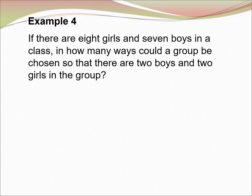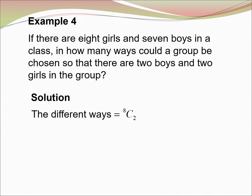Example 4. If there are 8 girls and 7 boys in the class, in how many ways could the group be chosen so that there are 2 boys and 2 girls in the group? We have 8 girls and we need to choose 2 only, so the method is 8C2. And we also have 7 boys and we want to choose 2, so the method is 7C2. Since this happens together, it becomes 8C2 times 7C2 equal to 588.